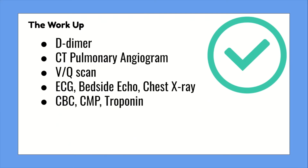Now let's talk about the workup. One thing to mention is that providers have to rule out other explanations for the patient's symptoms, so things may be ordered that aren't just for the PE but to rule in or out other conditions. For example, symptoms of a pulmonary embolism include shortness of breath and chest pain, but those can also be a manifestation from a heart attack, pneumonia, and more — that's why the provider has to order different tests to rule out different conditions.